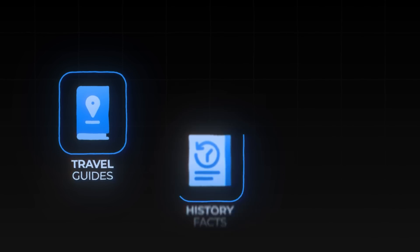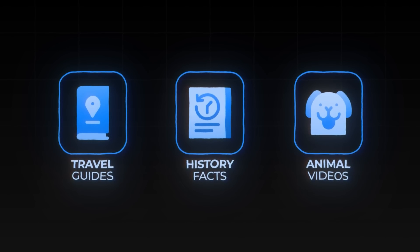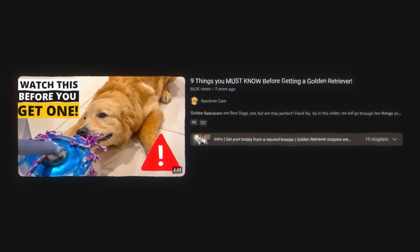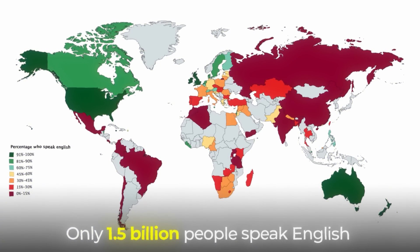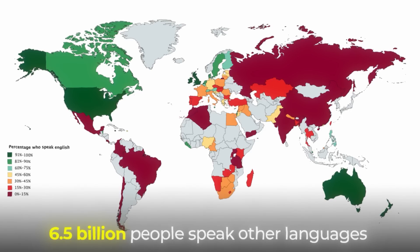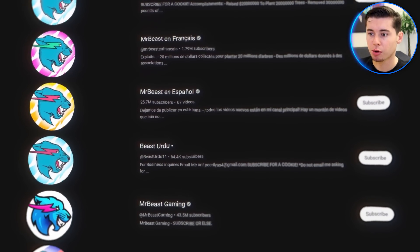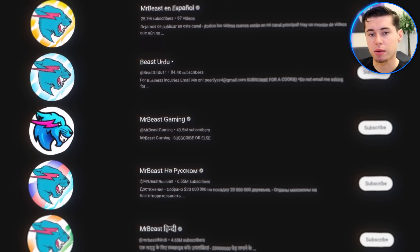In my opinion, it mainly excels at information-based videos — travel guides, history facts, videos about animals, and many other concepts. I recently generated a video about golden retrievers covering things you should know before getting one. What I can now do is find where people are buying golden retrievers the most, translate that video into that language, and upload it for that market. There are 1.5 billion people in the world who speak English, and that leaves another 6.5 billion you can't reach in English. Mr. Beast actually pioneered this concept with channels in all languages, started three years ago, to grow his audience — and translating his content unlocked a massive income stream in other parts of the world.